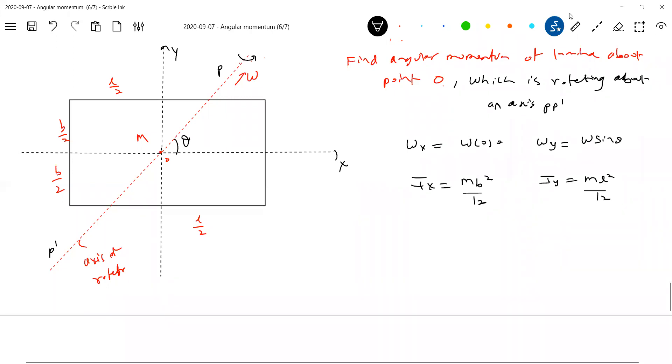Already we have discussed the moment of inertia of this lamina about x-axis. M B square by 12. Sorry, L will not come. I think we did check it once calculation. About y-axis, it should be M L square by 12. Then, angular momentum about x-axis. Angular momentum about x-axis should be equal to Ix into omega x. This should be equal to M B square by 12, omega cos theta, i cap.